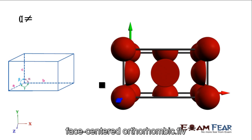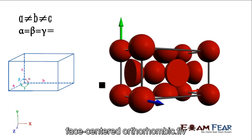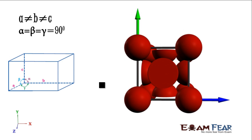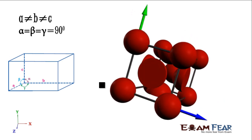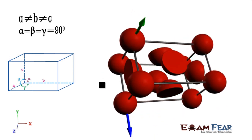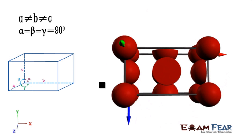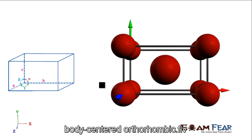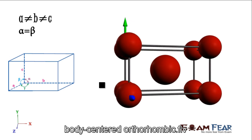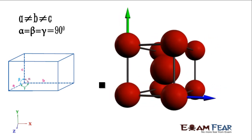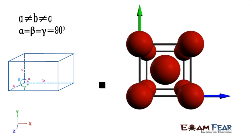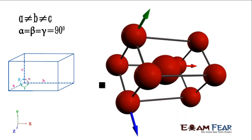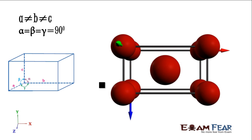The next type of packing for orthorhombic is face centered. The sides are not equal but all the angles are equal. We have atoms also on the face. After that, body centered orthorhombic has atoms on the center of the body.